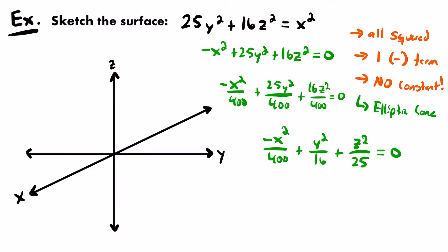Now we need to use the equation to sketch this surface. An important thing to identify is the direction axis — which axis is the elliptic cone directed along? We determine that using the odd man out strategy. Looking at our equation, two terms are positive and only one is negative. The negative variable term is the odd one out — that's the x variable — which means our elliptic cone will be directed along the x-axis.